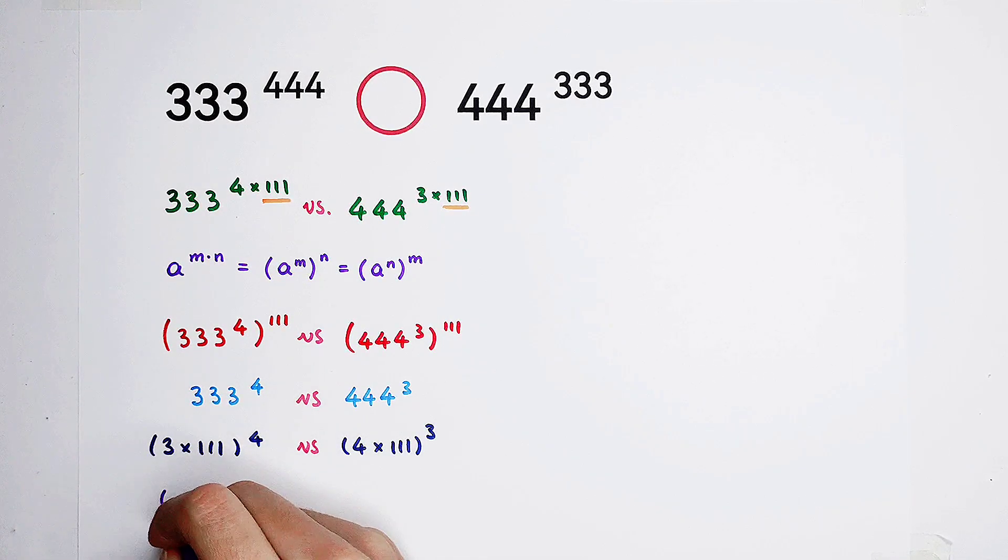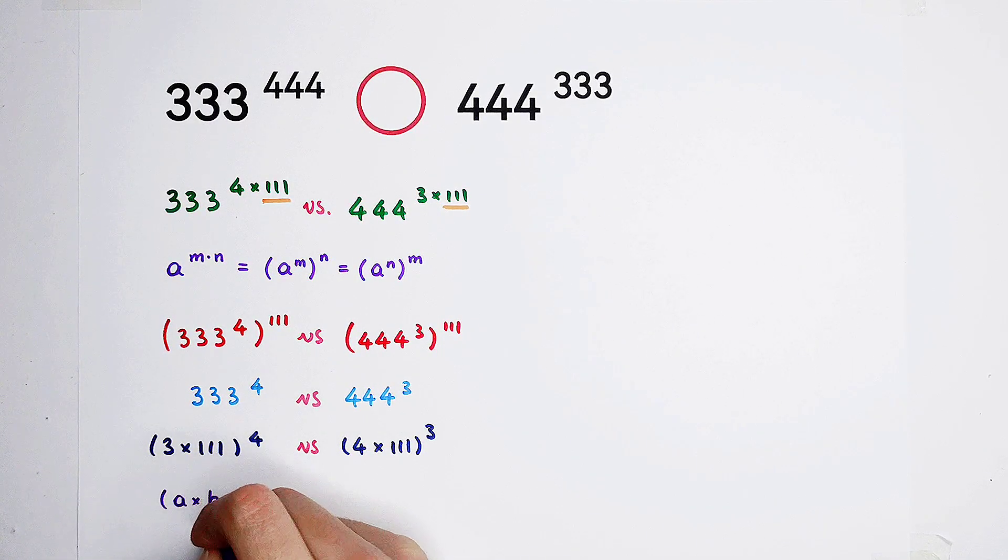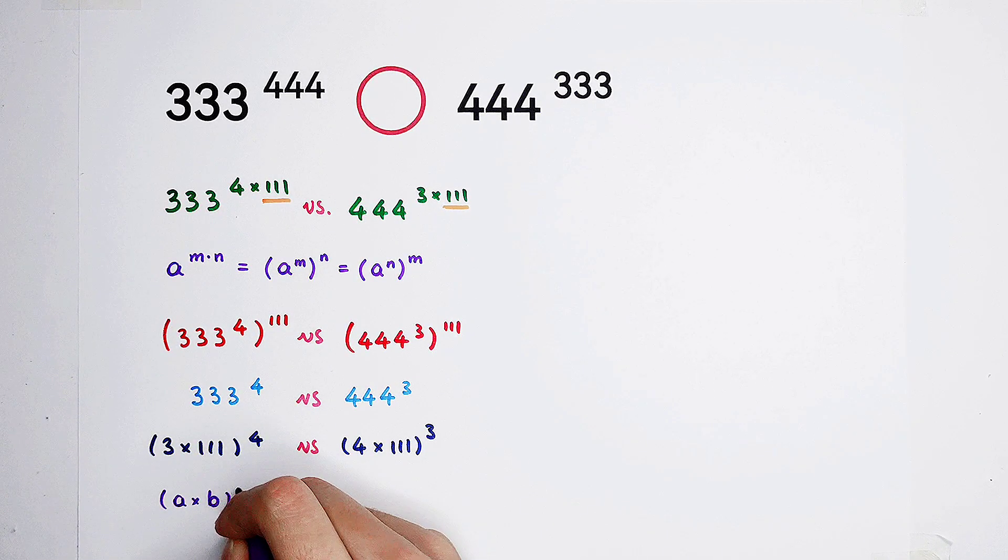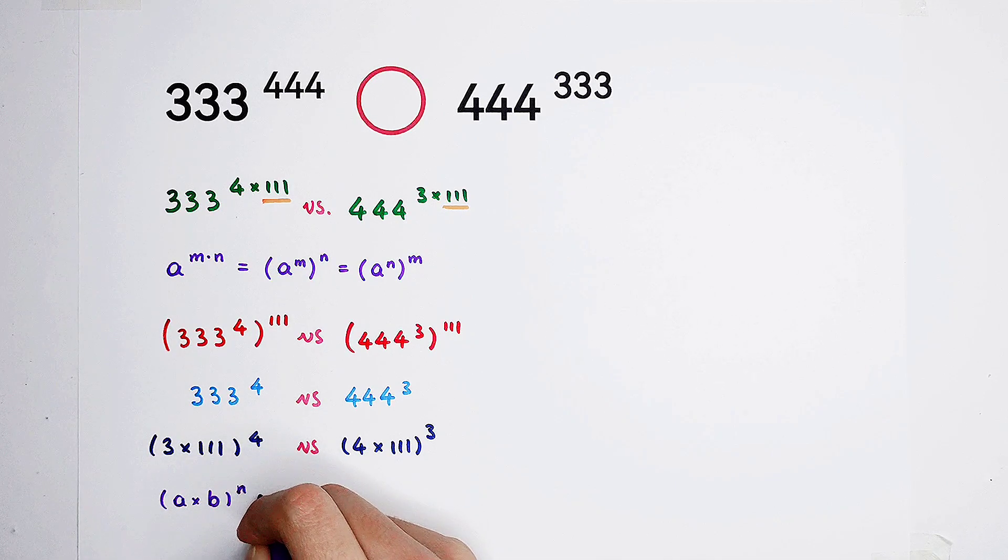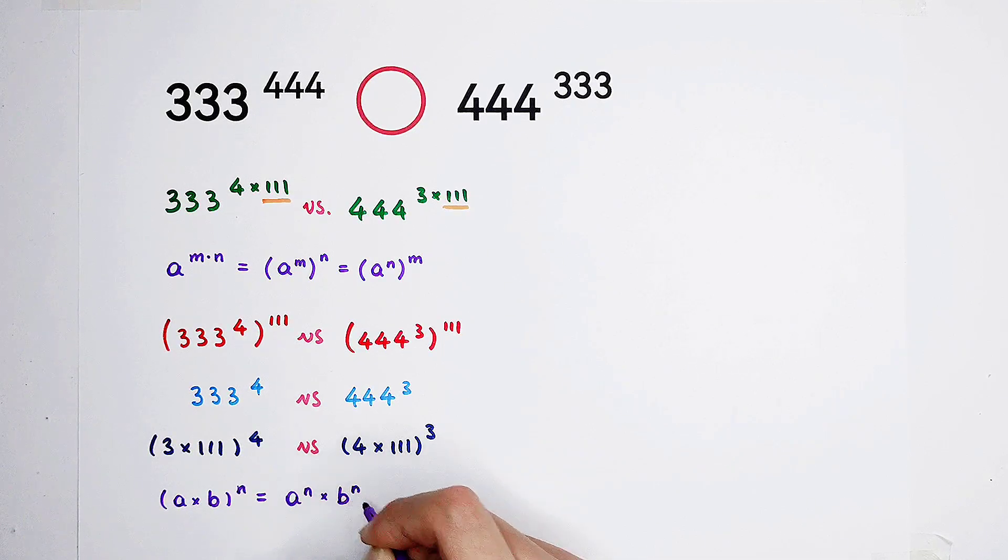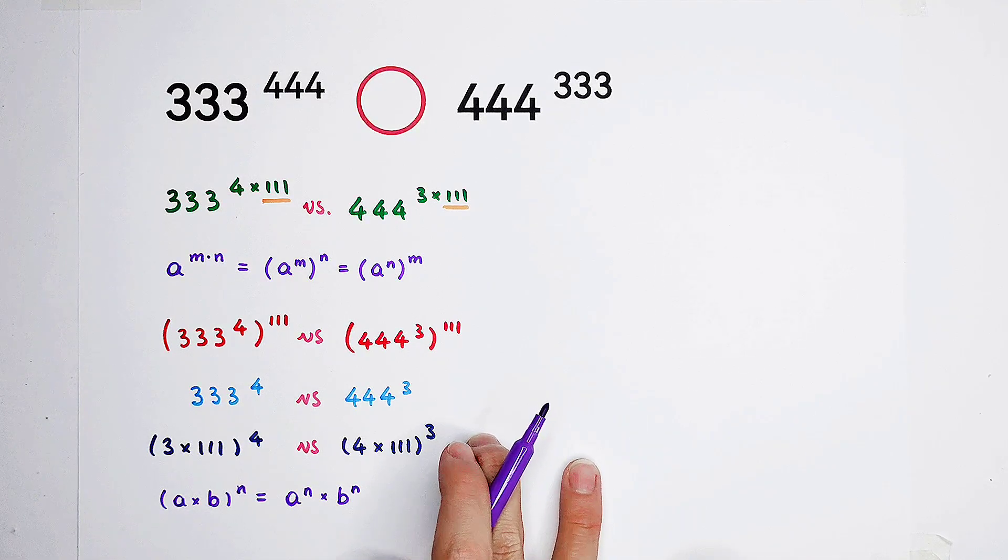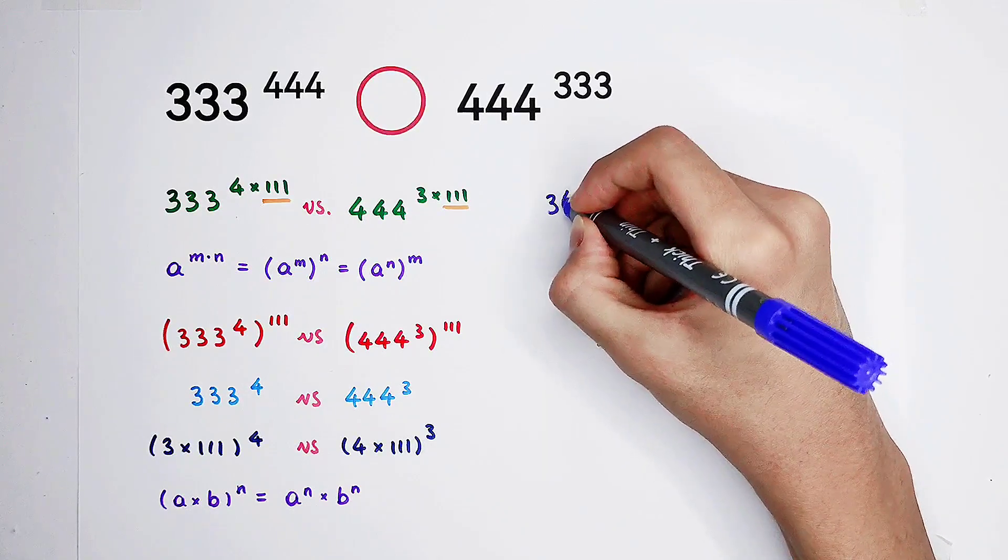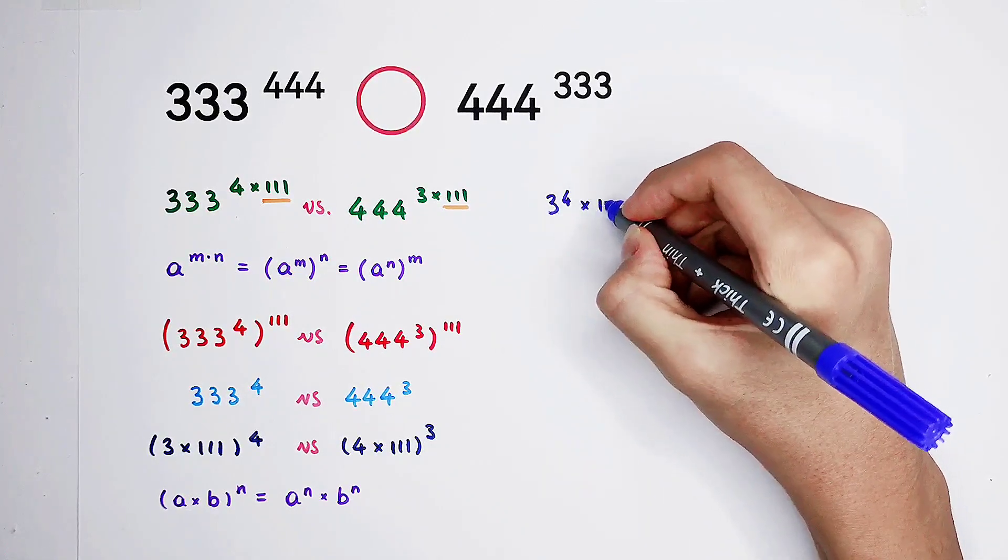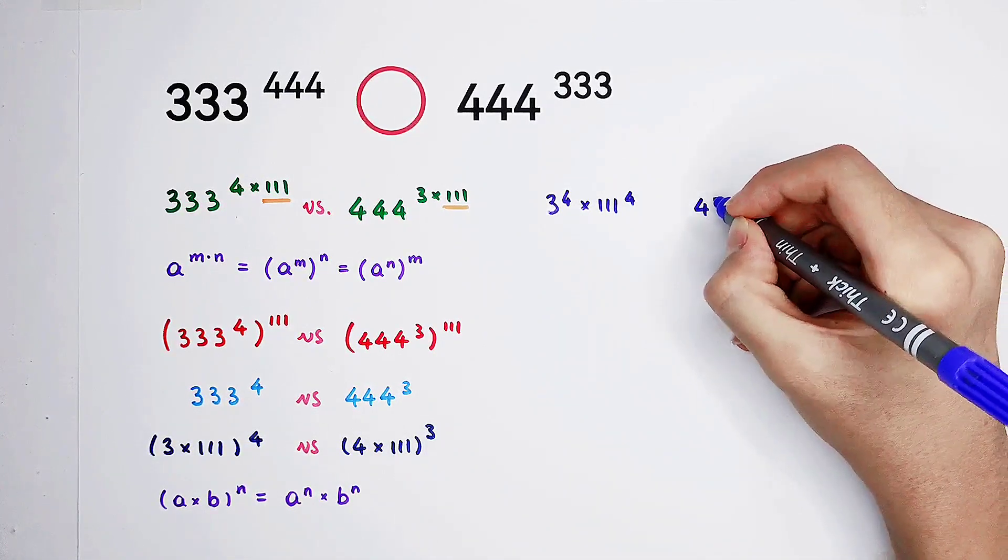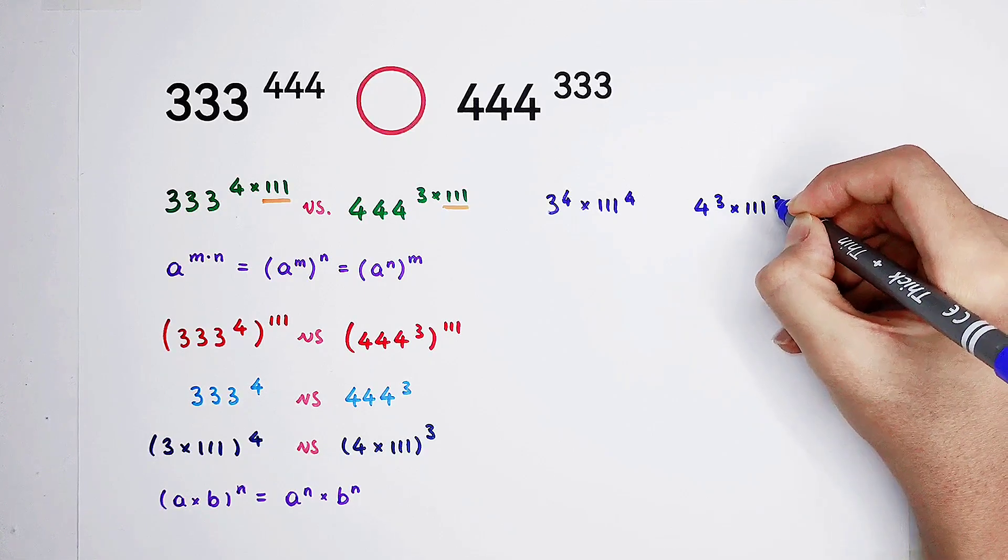Here, I like to use another exponential operation, a formula. a times b all to the power of n. It can be written as a to the power of n, then times b to the power of n. Of course, it is very, very valuable for our last step, for simplification. Okay, that means here, it is 3 to the power of 4, then times 111 to the power of 4. And the right hand side is 4 to the power of 3 times 111 to the power of 3.